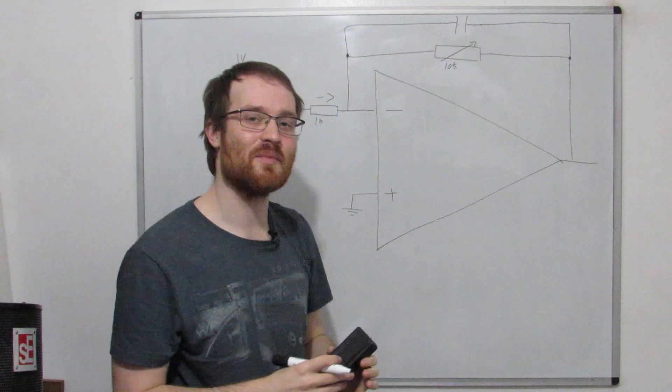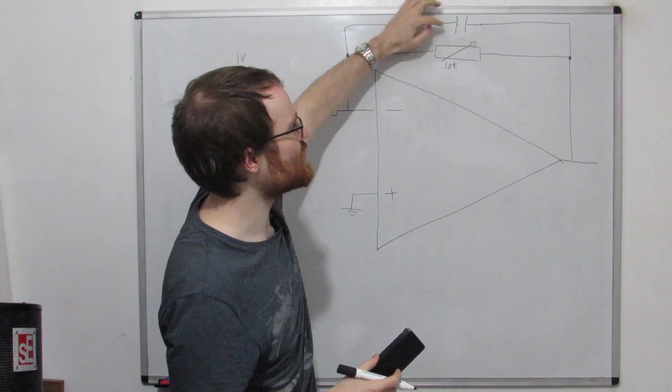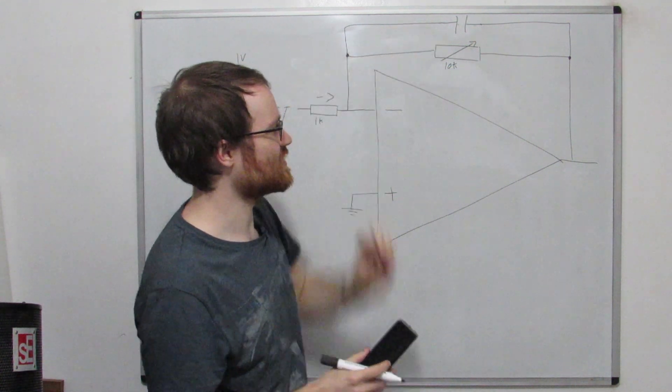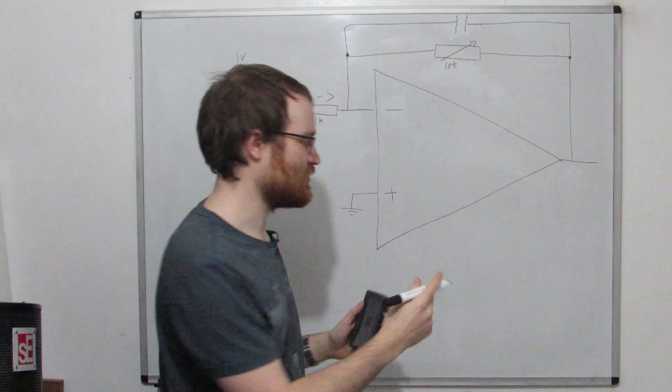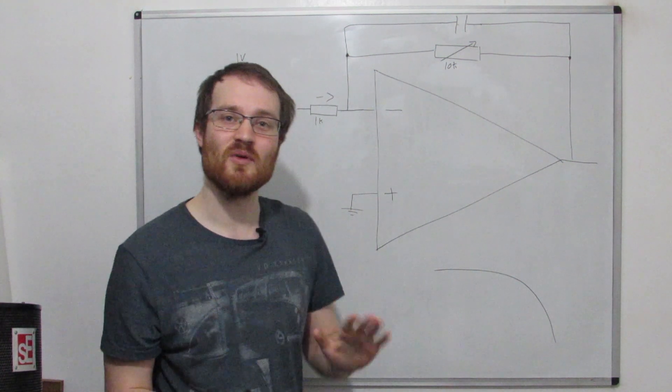So in this context we're just thinking of this capacitor as a frequency dependent resistor, and it's the frequency at which this resistance becomes comparable to this resistance that is going to set the point at which it starts to filter.